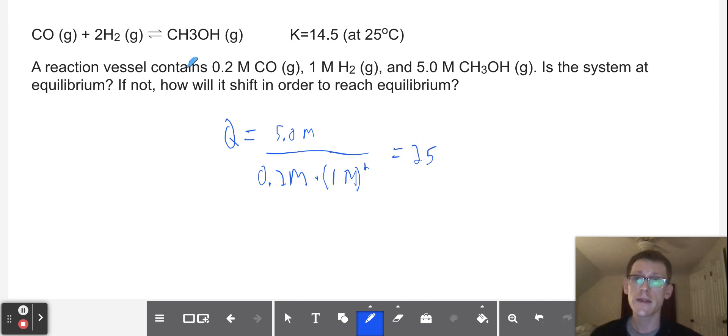Now, what this tells us is that this system, which has a bit of carbon monoxide, a bit more hydrogen, and quite a bit of CH3OH gas. If we compare that to K, what we see is that we're too far weighted towards the product. So in this case, we're going to have to shift leftward to get our Q down from 25 to 14.5 if we want to establish equilibrium. So this is not at equilibrium and it will shift leftward.